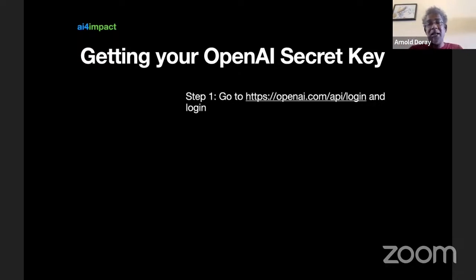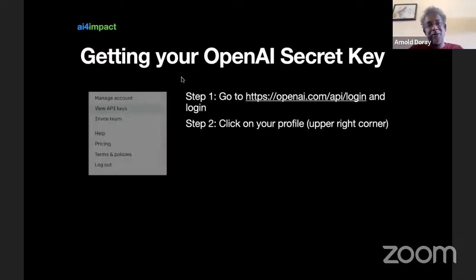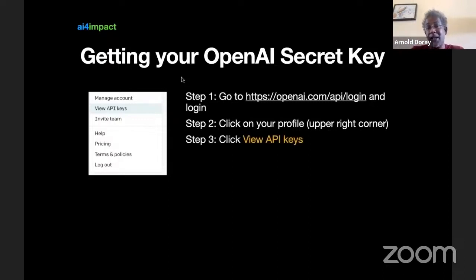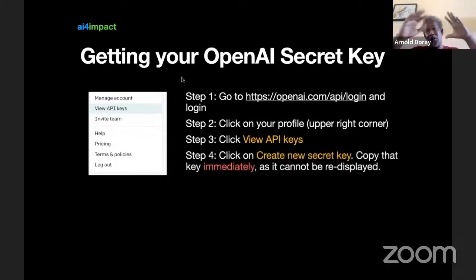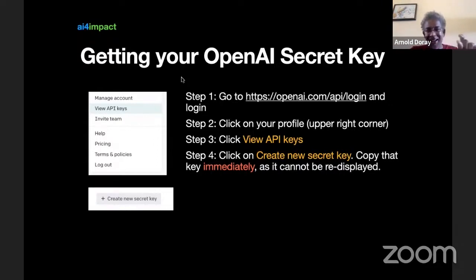Enter your username and password to log in. Next, go to the upper right — there's a little circle there. Click on that circle and you'll get a dropdown. On that dropdown, the second item — which may change over time but currently is called 'View API Keys' — click on that. You'll be brought to a page called 'View API Keys' where there is a clear button called 'Create New Secret Key' with a plus sign.